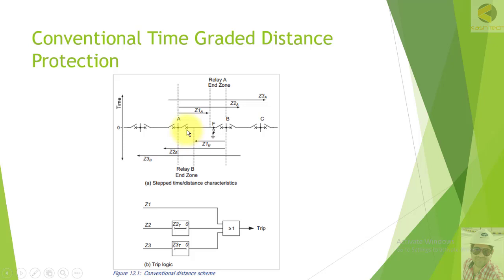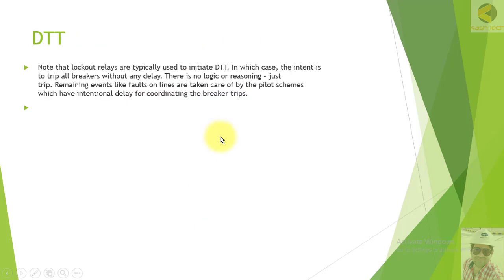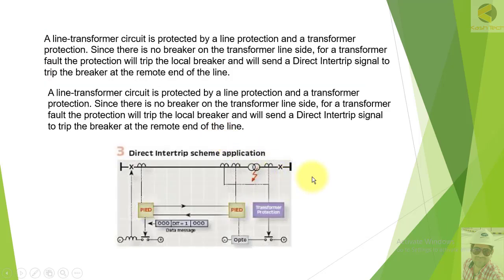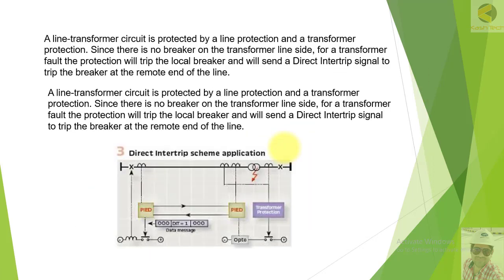This is another type of direct transfer trip scheme employed for overvoltage on 500kV long transmission lines. For example, we have 500kV lines from Jamshoro to Hub and Jamshoro to Dadu — these are long lines. To control the voltage on long lines, reactors are installed, but in some cases voltage may still rise even with reactors available. In that case, DTT is used on the 500kV line to trip the line and save the insulation. This was all about the direct transfer trip scheme — it is a very simple scheme and I hope you understood it well. We will move to our next topic, thank you.